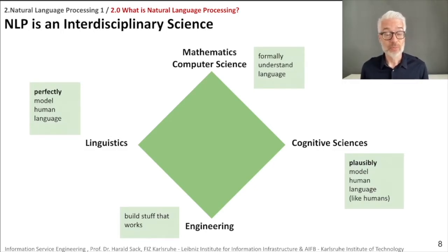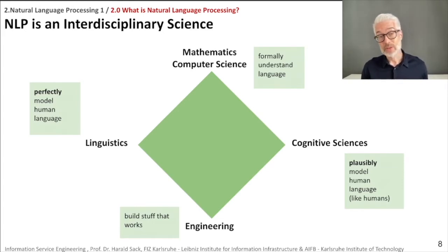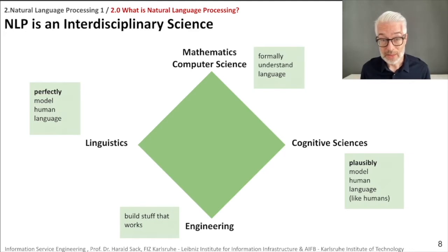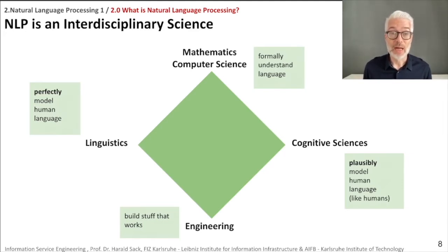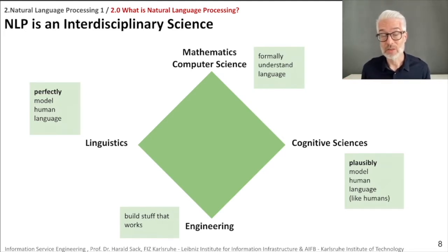On the one hand, from the viewpoint of linguistics, what we are going to do is try to perfectly model human language. But for that, we also want to do this for the computer, which means from the viewpoint of mathematics and computer science, we have to come up with a formal understanding of language — a formal model with a formal interpretation — so that we are able to understand and correctly interpret language.